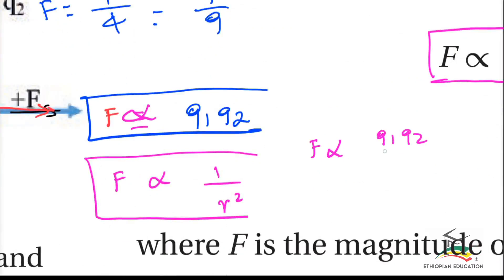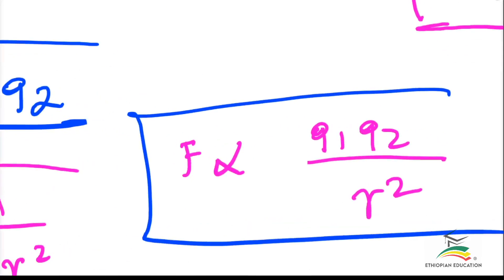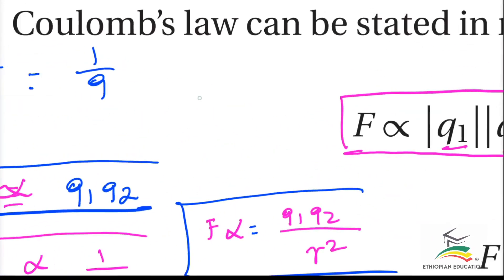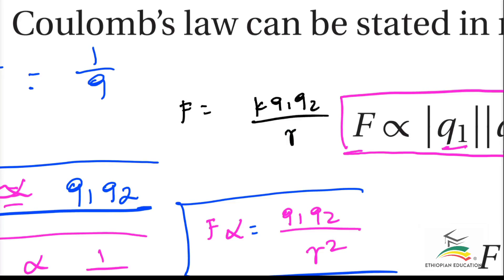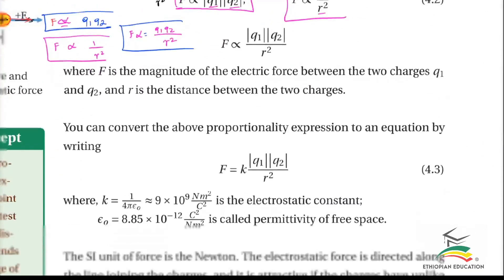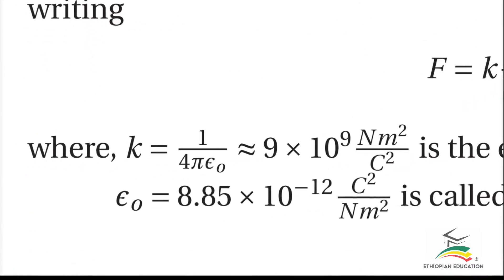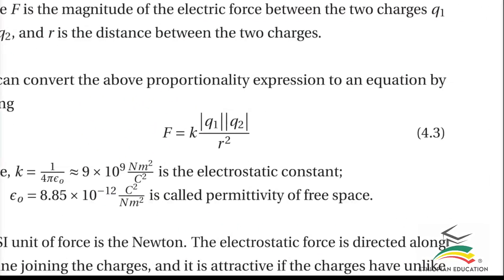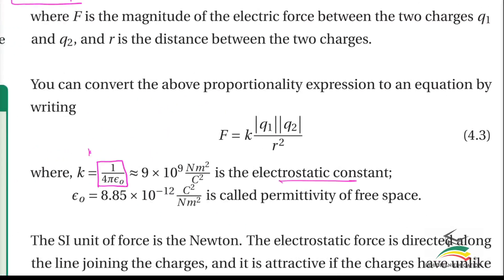So, this is R squared. Proportionality equal to a constant. So if we call it K times q1 times q2 over R squared. K is a constant, and K equals 1 over 4 pi epsilon naught.